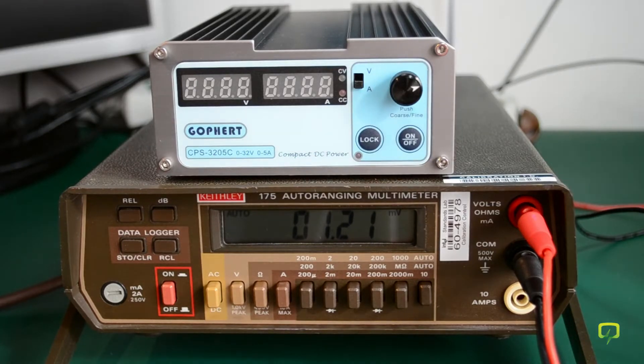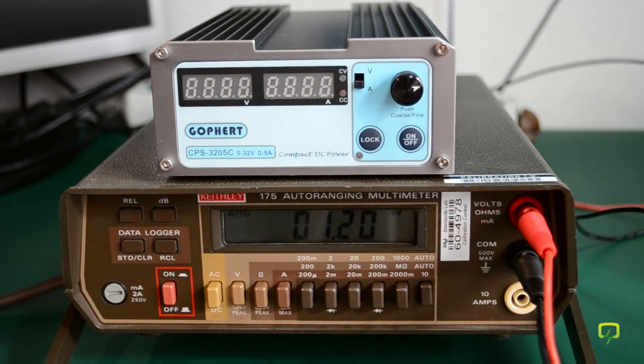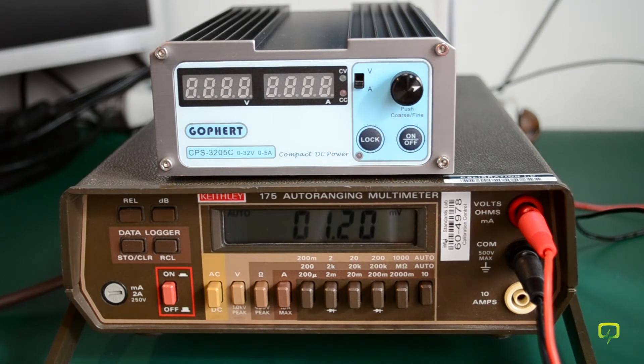For that, I'll be using my KITLEY 175 4.5 digit multimeter that you can see here on the bottom. Although it's an old multimeter, it is spot on when compared to newer, more recently calibrated ones, and it's a really good piece of equipment that I enjoy using in my lab.